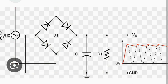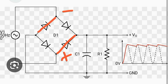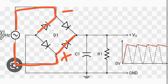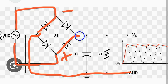During the negative half cycle, the polarity reverses, so the other two diodes become forward biased while the first pair becomes reverse biased. The signal passes through in such a way that the upper diode is again positive, the circuit completes similarly, and the load voltage develops across the output — positive at the top and negative at the bottom.